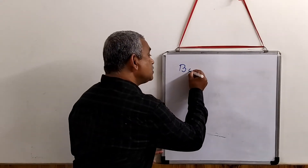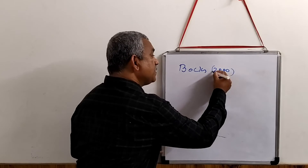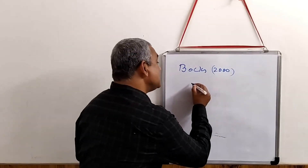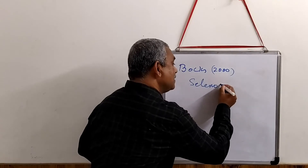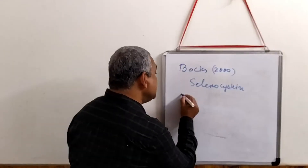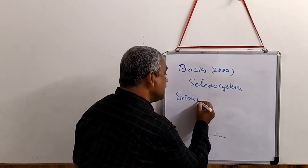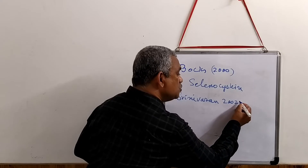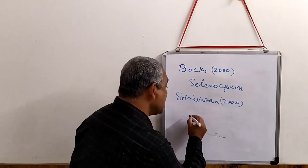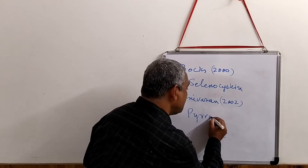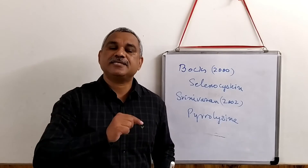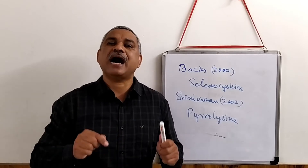That makes it about 20 standard amino acids. In the year 2000, Vox discovers a new amino acid: selenocysteine. And in the year 2002, Srinivasan et al. discovers another amino acid: pyrrolysine. The interesting fact is that pyrrolysine is present exclusively in archaea.